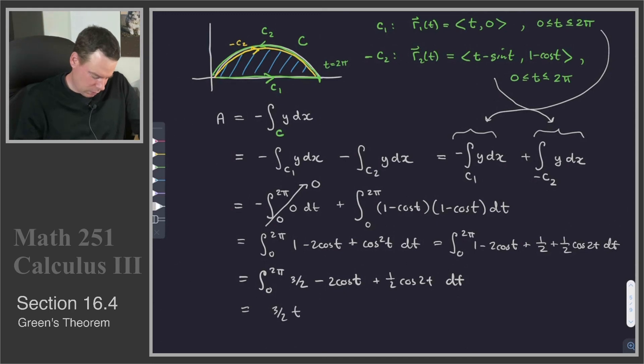The anti-derivative of cos of t, that would be sin of t. The anti-derivative of cos 2t, that would be 1/2 sin of t. So that becomes a 1/4. Sorry, sin 2t. And that's going to go from 0 to 2 pi.